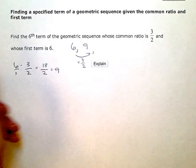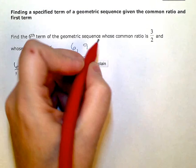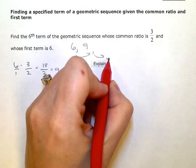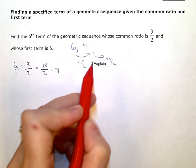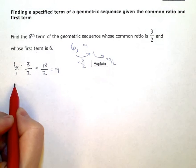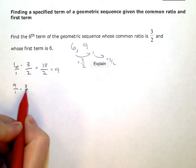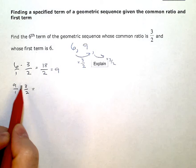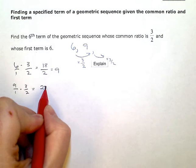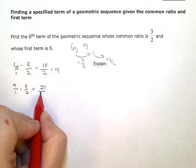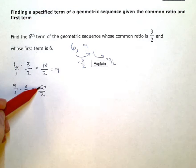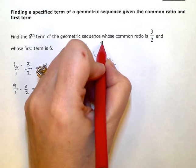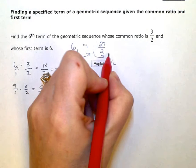Then I need to take nine times three halves to get my third term. So nine over one times three halves. Again, multiply fractions straight across. Nine times three is 27. One times two is two. Two does not go into 27, so I'm just going to leave this as an improper fraction for now.